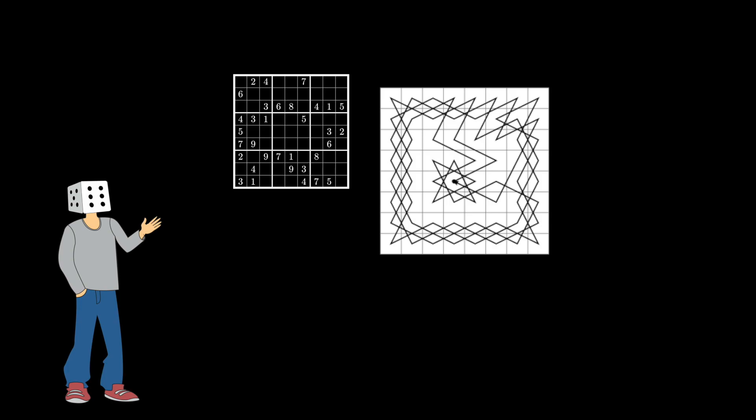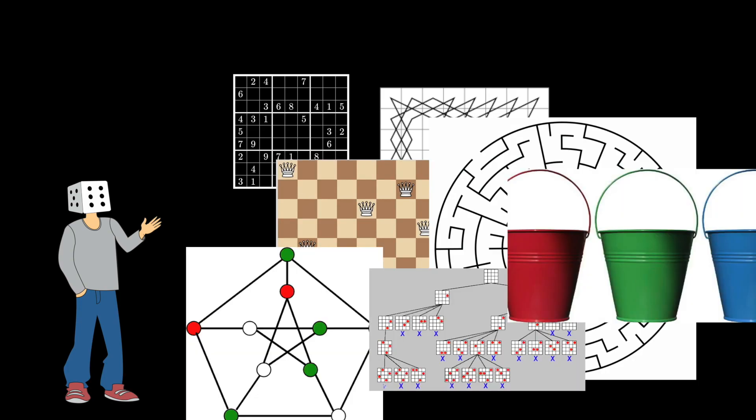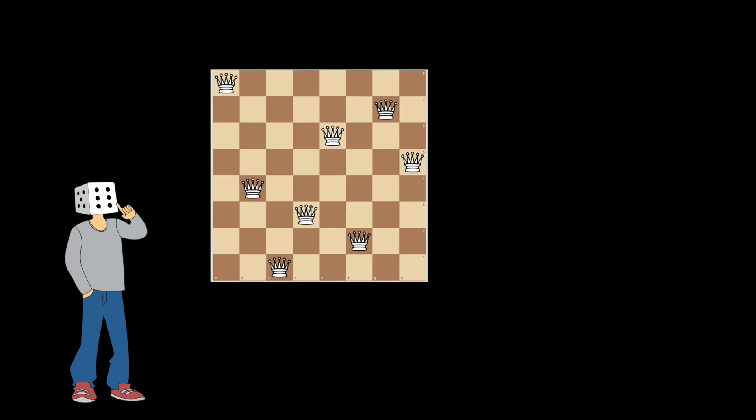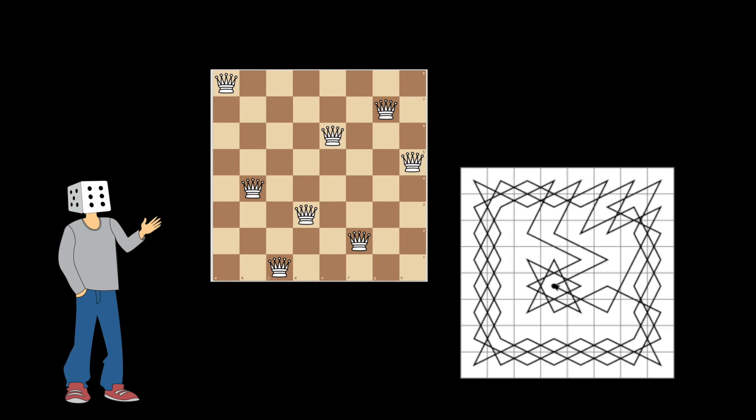Backtracking can be used to solve many different problems, and today we'll be focusing on two of them: the N-Queens problem and the Knight's Tour. In this video I'll first go over the basics of what backtracking is, and then we're going to solve both these problems. By the end of the video you should be able to solve both on your own as well as others.